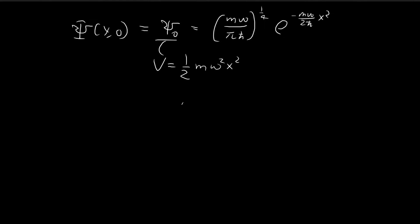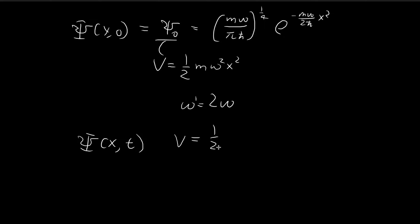We're told that suddenly ω becomes equal to 2ω. So the potential changes and we now have the case where ω is equal to 2ω. The wave function is going to keep evolving under this new potential, equal to ½m(2ω)²x², which simplifies to 2mω²x². So this is the new potential.